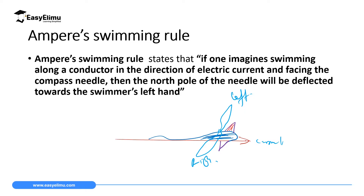So the north pole of the compass needle below the swimmer and below the wire will be on the left side, and this will be the south pole. From what we discussed in magnetism, this compass needle is used to predict the direction of the magnetic field lines. If the field line below the wire is moving towards the swimmer's left hand, and the magnetic field line forms a complete loop, then above the wire it would be moving towards the right hand, to form that complete loop.